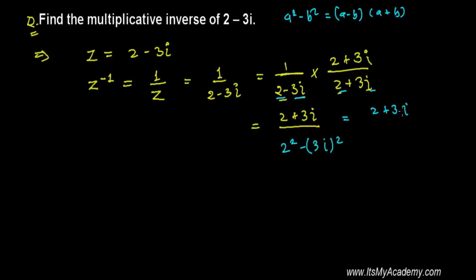So it's 2 plus 3i divided by 2 square that is 4 and 3 square that is 9 and i square that is minus 1. So minus 1 it will be plus 1 and now it is 2 over 13 plus 3 over 13i.